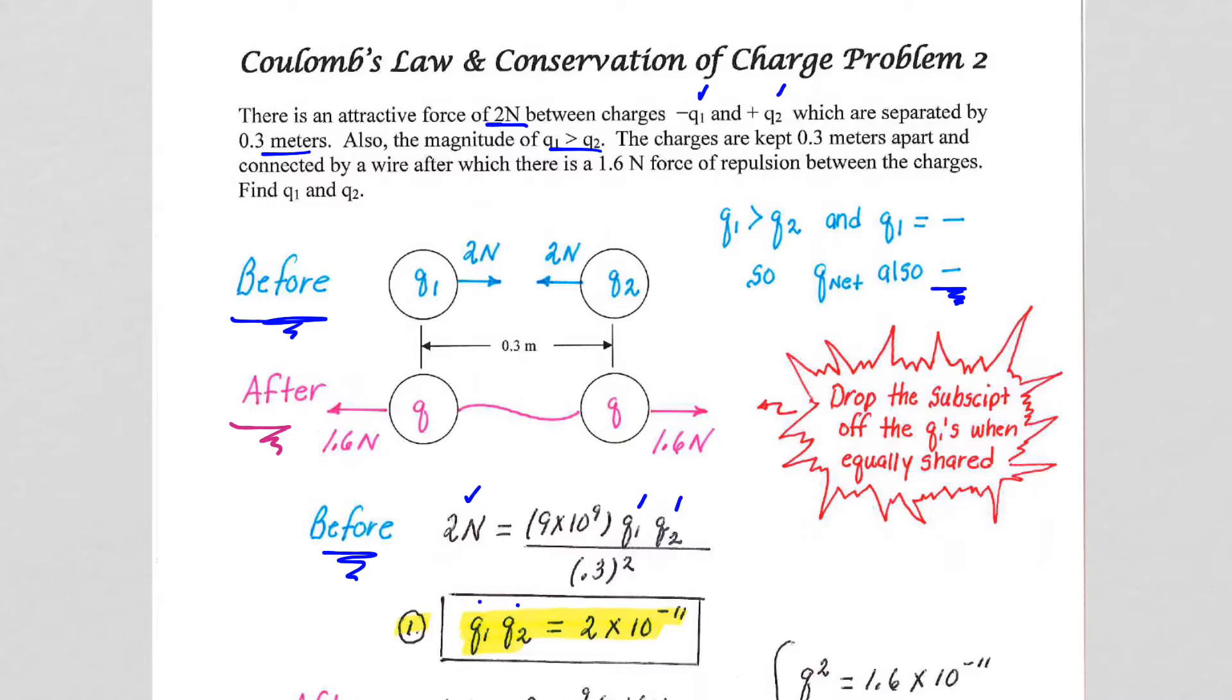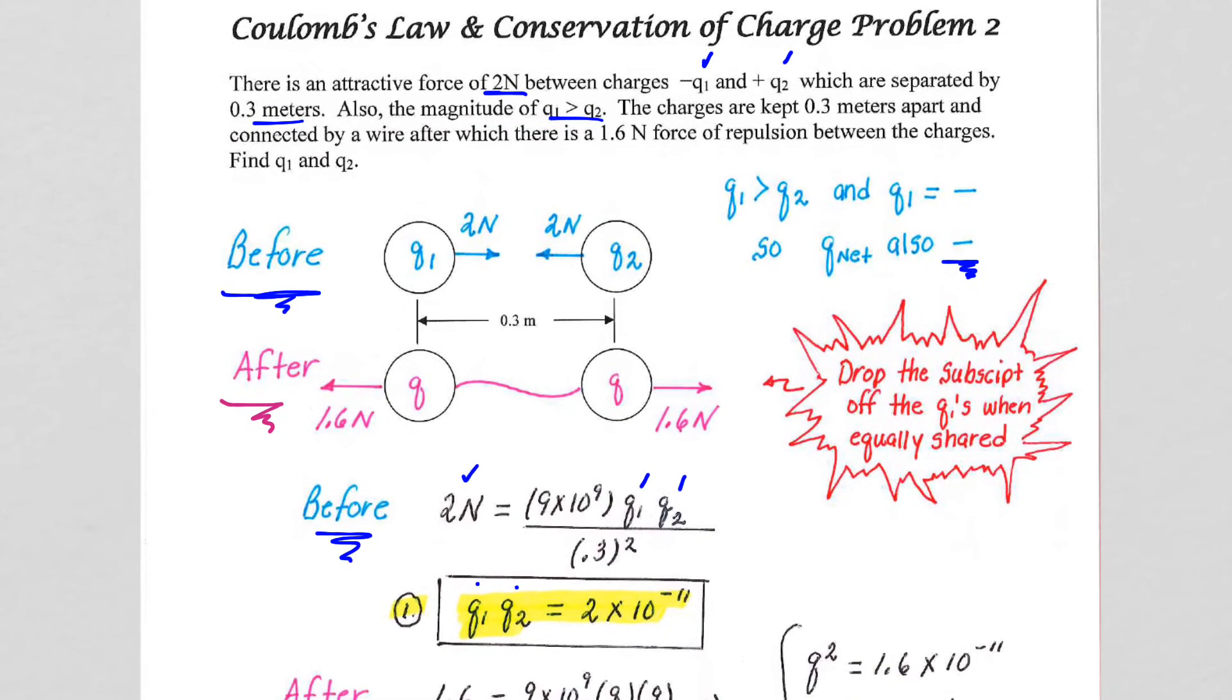We have to be given some information after they touch, and we are. We're told that the distance between them remains the same, so they remain 0.3 meters apart, but we're told the force now changes. We go from 2 to 1.6. So let's get the after information down here, and I'll get back to my exploded statement here.